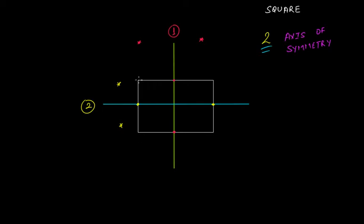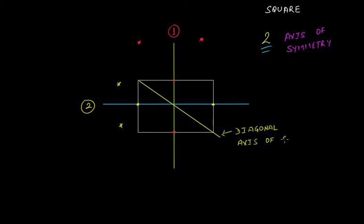How? If I pass a line from these two opposite vertices — this line is actually a diagonal of this square — this will also act as an axis of symmetry. Because this line is dividing the square into two equal halves, one half and another half, and these two halves are mirror images of each other.